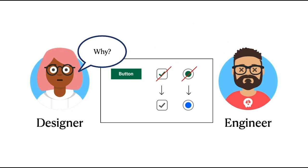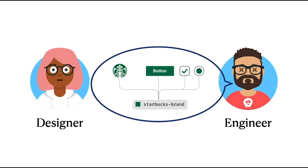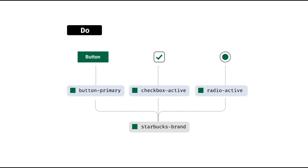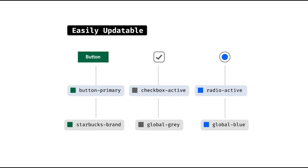The engineer says we can't do that. The designer asks why. The engineer explains: right now, everywhere we want to use that color we are using the token Starbucks brand. If we were to unlink some of these, that means we have to go to every single place we used it and manually replace the value — and it's going to take a long time. So you see there's a problem here. What do we do when different components use the same color, but we can't assign them the same token?